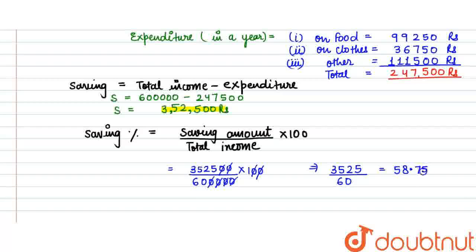58.75%. It means the amount he saved is 58.75% of his total income. This is the answer. Thank you.